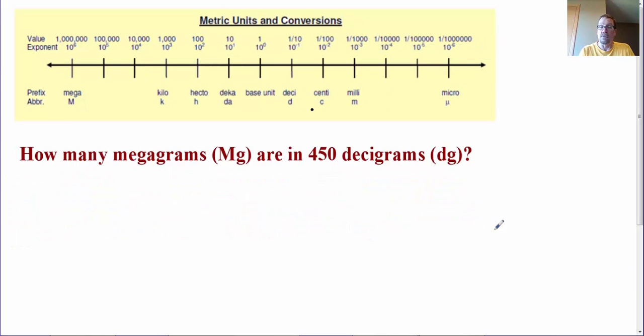So let's go to our next problem, and this is what I told you. We are going to start at deci, here, and we are going to move left to mega. We're going from 10 to the minus 1 to 10 to the 6th. Now, let's get us started here. We're at 450. It's going to move towards our left, and it's going to move from minus 1 to 6, or it's going to make 7 moves.